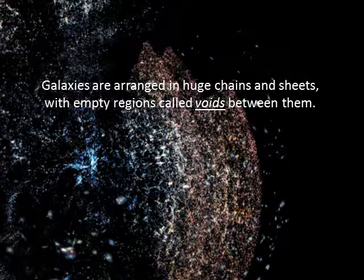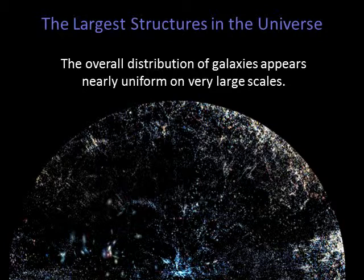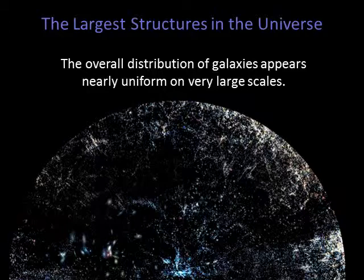Clusters of galaxies are located at the intersections of these chains. Between these chains and sheets of galaxies are giant empty regions called voids. The overall distribution of galaxies appears nearly uniform on very large scales, and the structures we see appear to mirror the original distribution of dark matter in the early universe.